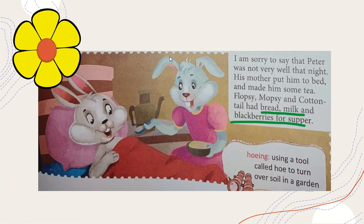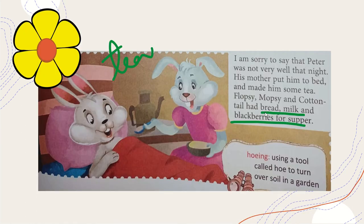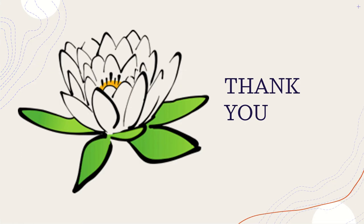That night since Peter was ill, he only had some tea and stayed in bed. But the other three — Flopsy, Mopsy, and Cottontail — who had followed their mother's warnings, had bread, milk, and blackberries. Peter didn't gain anything: he ate a few lettuces and French beans, became sick, ran so much, and at the end of the day only got tea to drink.